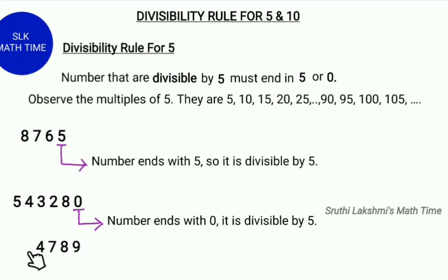Now, let's see 4,789. Here, 4,789 ends with a 9. Since it does not end with a 5 or 0, it means that 4,789 is not divisible by 5.